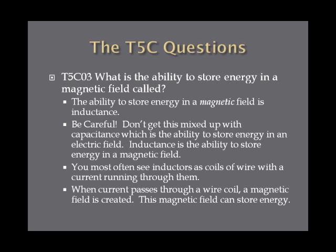What is the ability to store energy in a magnetic field called? The ability to store energy in a magnetic field is inductance, and you need to be careful between inductance and capacitance. Capacitance is the ability to store energy in an electric field. Inductance is the ability to store energy in a magnetic field. You most often see inductors as coils of wire with a current running through them. That current running through that coil creates the magnetic field. So just remember: magnetic field, inductance.